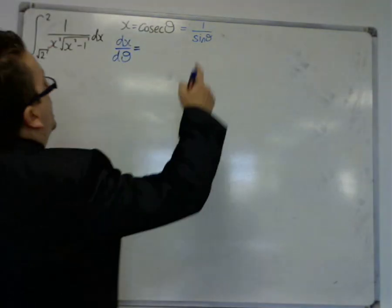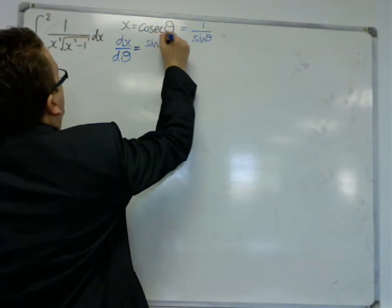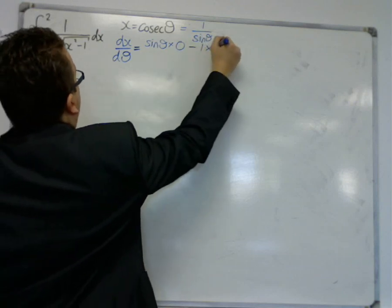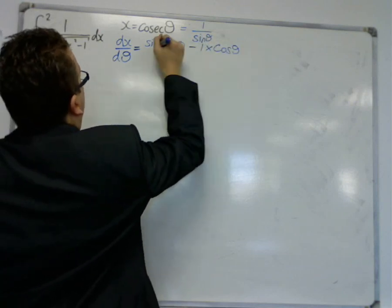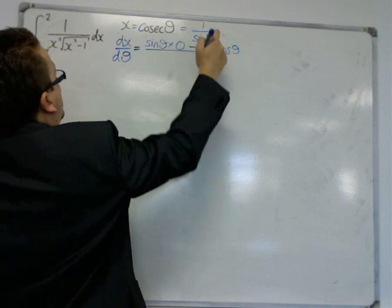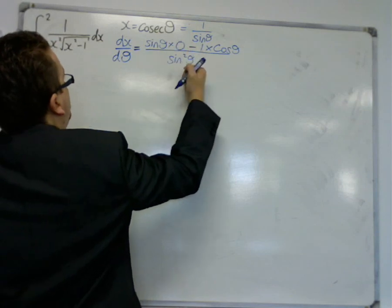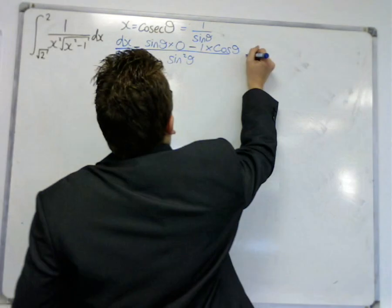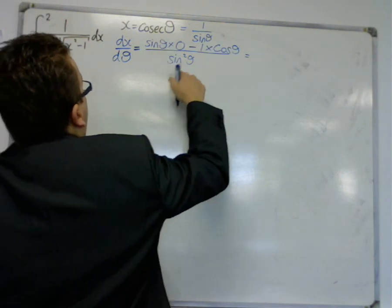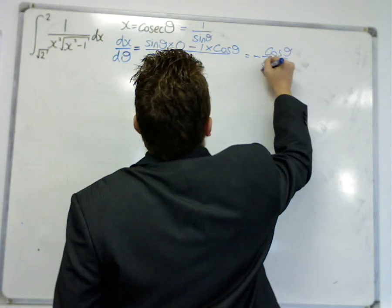So we look at the bottom times the derivative of the top, which is just zero. Take away the top times the derivative of the bottom, okay? Okay, so we've got the top times the derivative of the bottom, the derivative of the bottom is cos theta, over the bottom squared. So this simplifies to zero, take away cos, over sine squared. So that's minus cos theta over sine squared.